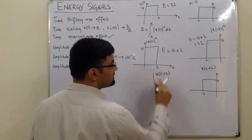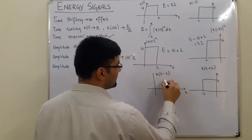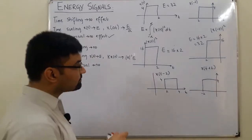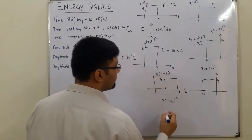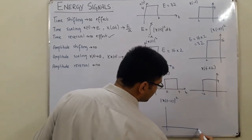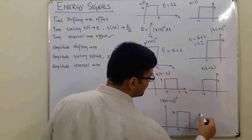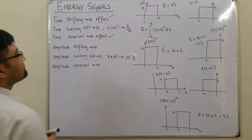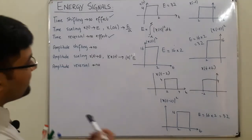Let's also try x(t−2). Minus 2 shifts it 2 units towards the right, so it starts from 2 till 4, with amplitude 4. Taking |x(t−2)|², we get 16 from t=2 to t=4. The energy is 16 × 2 = 32 again — no effect of time shifting.